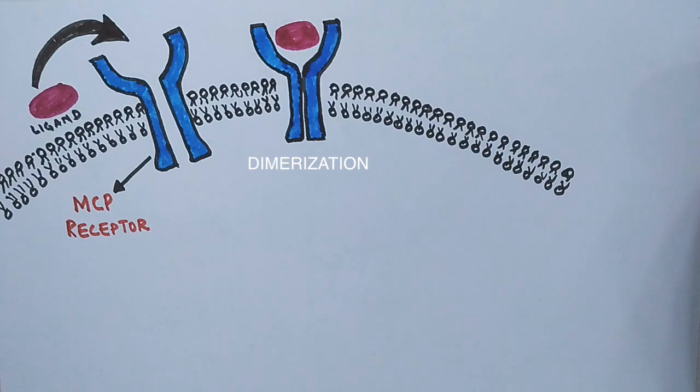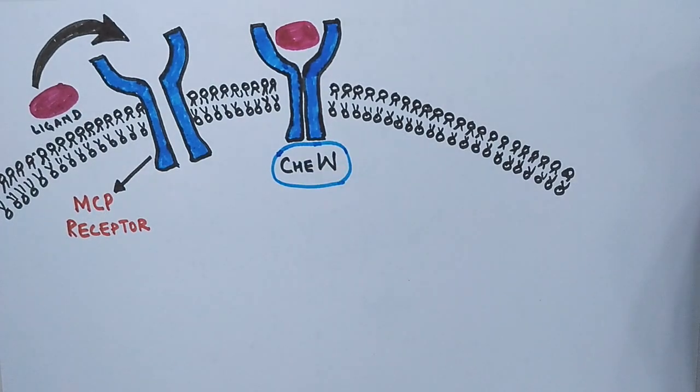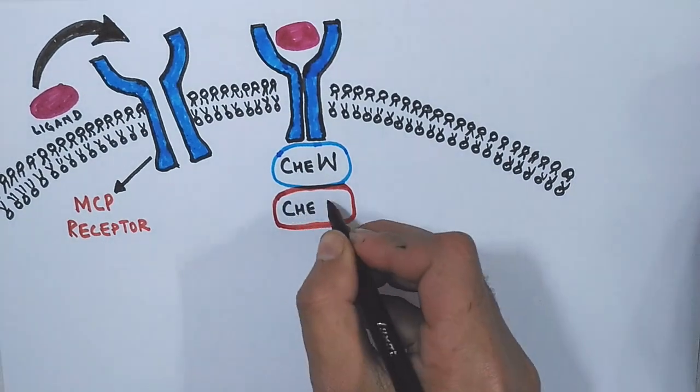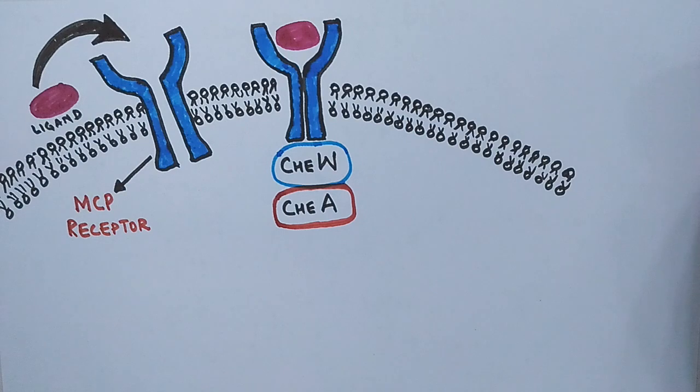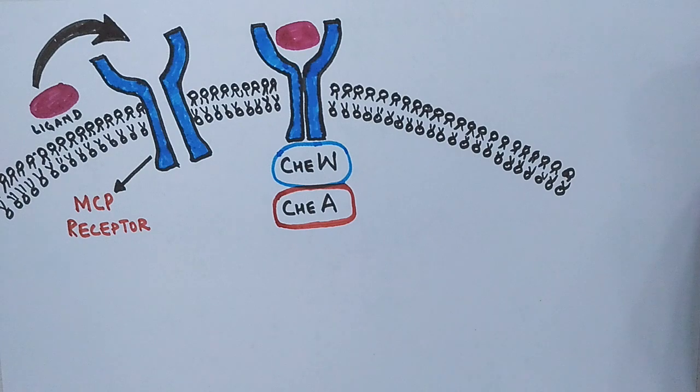After dimerization of MCP, the MCP recruits two more proteins. One is called CheW protein, another one is CheA protein. The CheW protein acts as a transducer protein for the signal to be transmitted to CheA protein, and it is this CheA protein which acts as a sensor kinase.